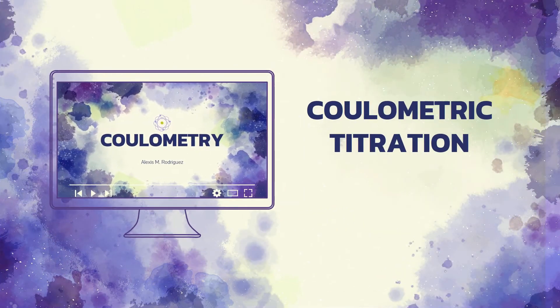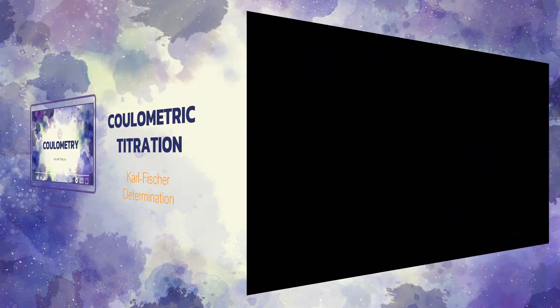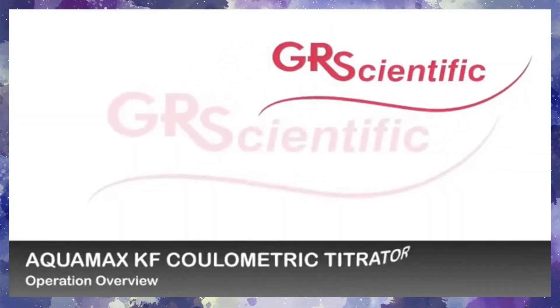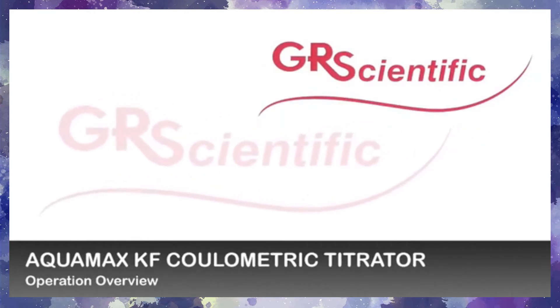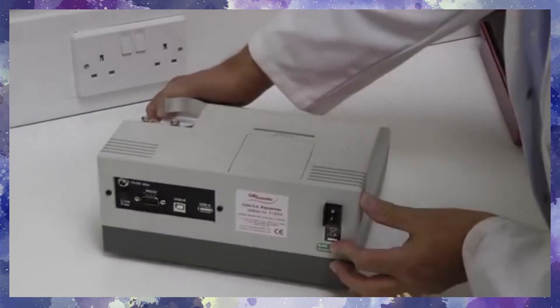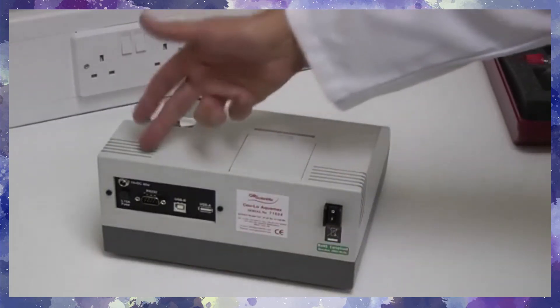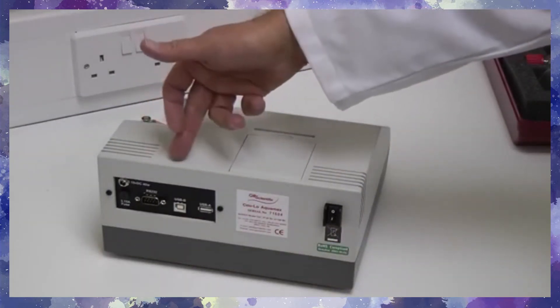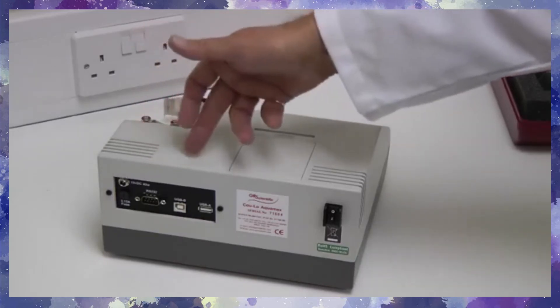Here is a short video involving the use of coulometry, specifically coulometric titration, in the determination of water or moisture in liquid samples using Karl Fischer titration. At the rear of the unit are the power switch, the power inlet, the fuses, and the RS-232 and USB connections.